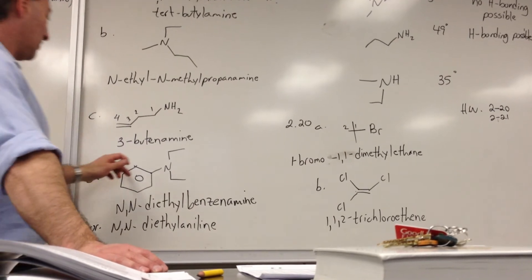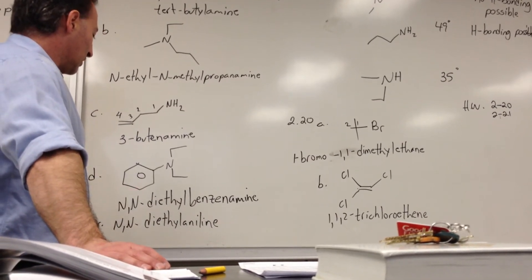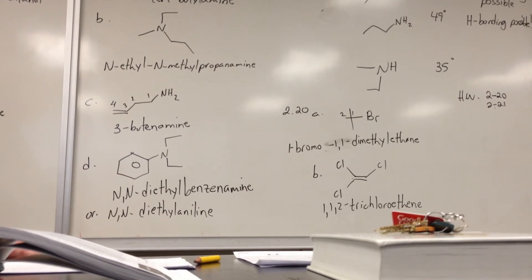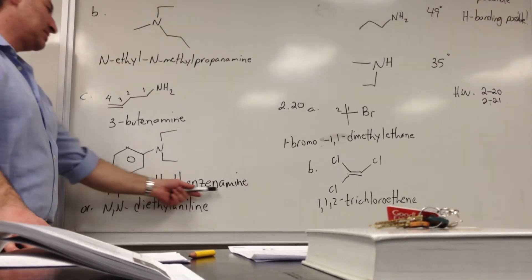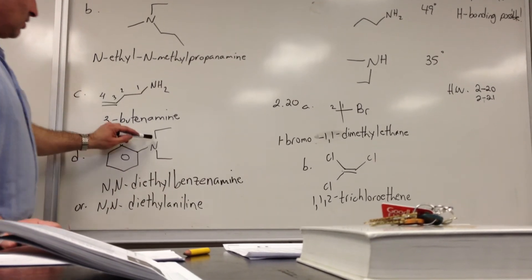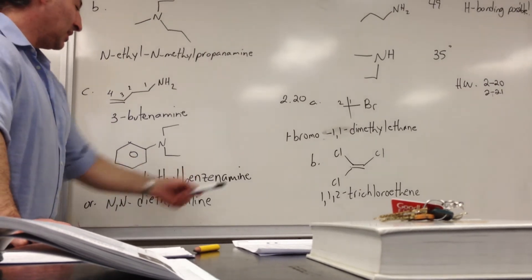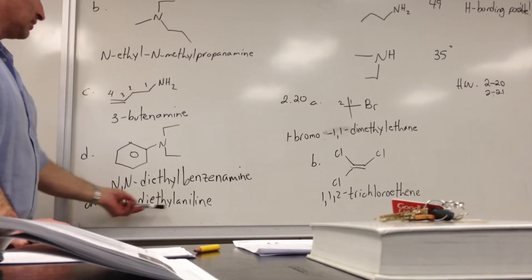Here we have benzene with a nitrogen on it. That's normally called aniline. Benzene with an NH2 on it is called aniline. Or you could say benzene amine. So it ends up being called, because there are two ethyl groups attached to the nitrogen, N,N-diethylbenzene amine. Or you could also say N,N-diethyl aniline.